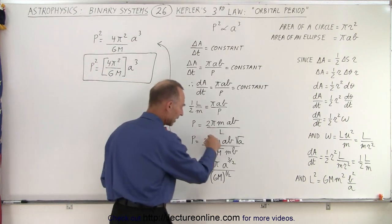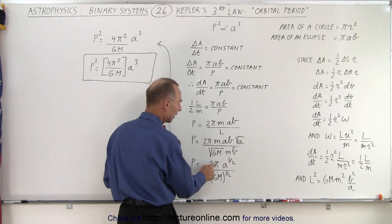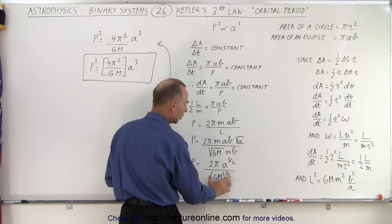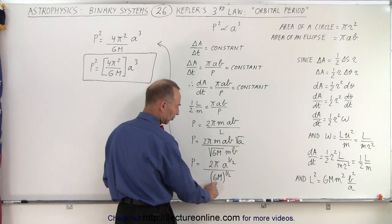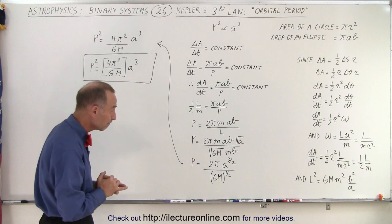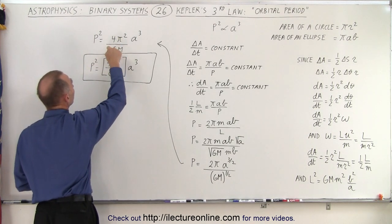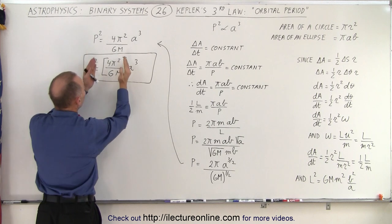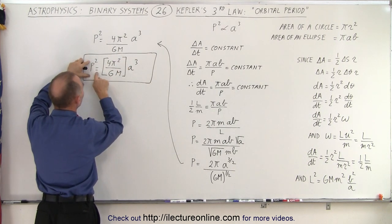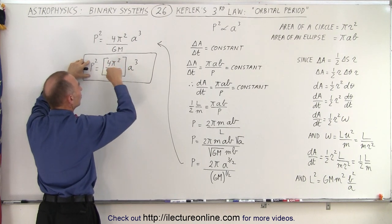Simplifying that, notice that the m's cancel out, the b's cancel out, so we end up at the period equals 2 pi times a to the three halves divided by GM to the one half power, G being the universal gravitational constant, m being the mass of the sun. Then if we square both sides, we end up at p squared equals 4 pi squared over GM times a cubed. Or if we put this in brackets here, you can see that p squared is proportional to a cubed and realizing that this here is a constant.